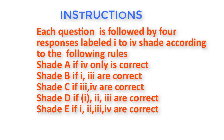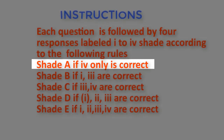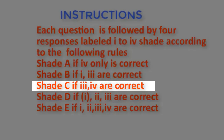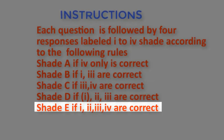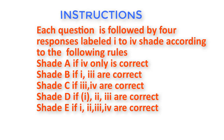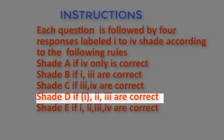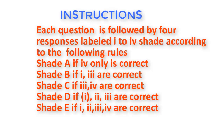I'm going to read out the rules that govern the selection of your answers. Each question is followed by four responses labeled one to four. Find out the correct response — it could be one response or responses — for each question. Shade in pencil on your answer sheet one of the answer spaces labeled A to E according to the following rules: Shade A if only four is correct. Shade C if only three and four are correct. Shade E if one, two, three, and four are correct. Shade D if only one, two, and three are correct. These are the rules you are going to follow in order to select your answers.